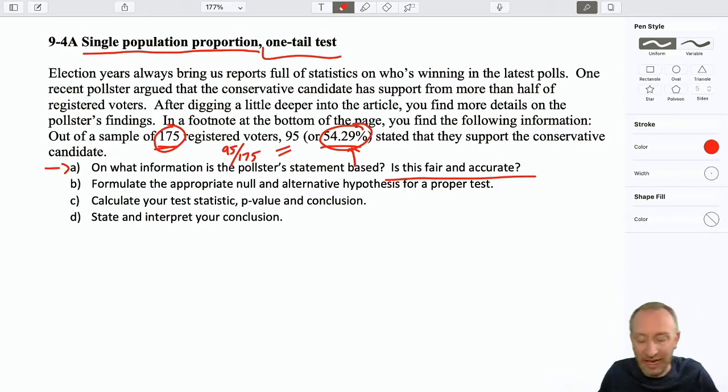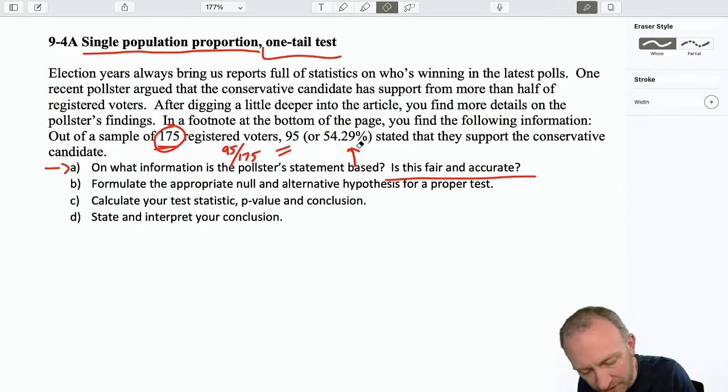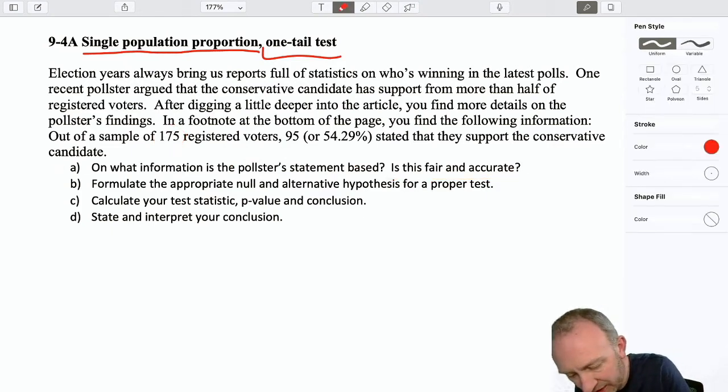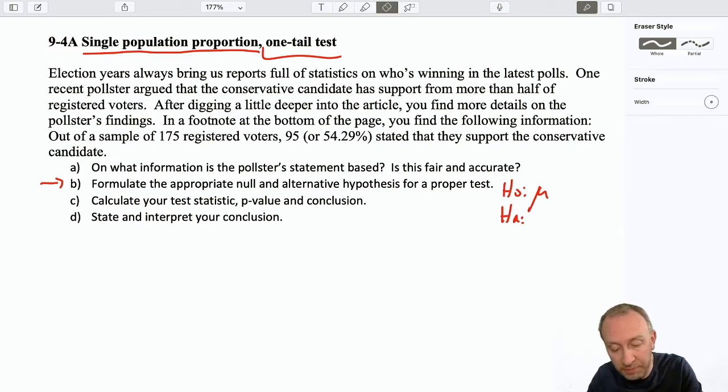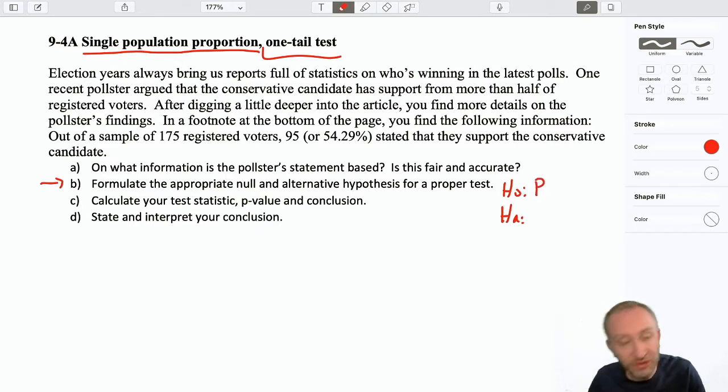So let's look at our problem. Here we're going to have, we need to formulate our test. So just like every other test, we need a null and an alternative hypothesis. Now we're dealing with proportions. So I'm not going to write mu because mu represents an unknown population mean.